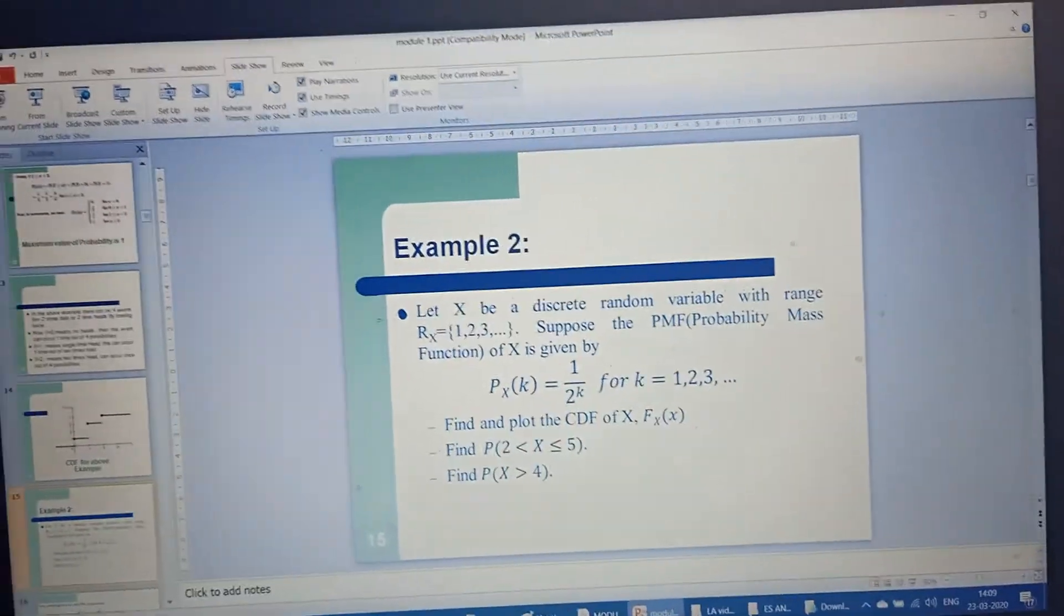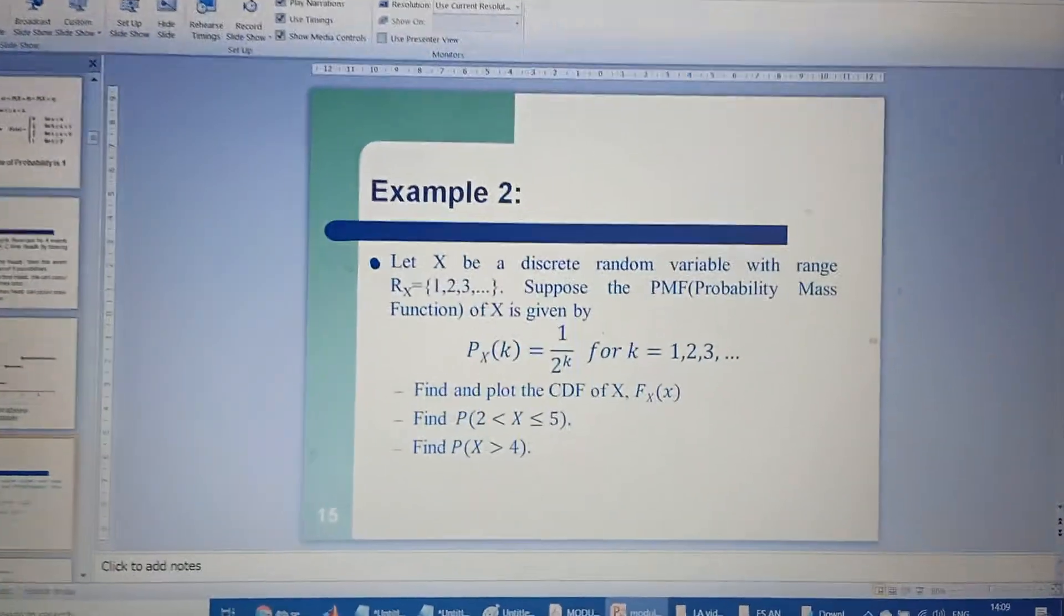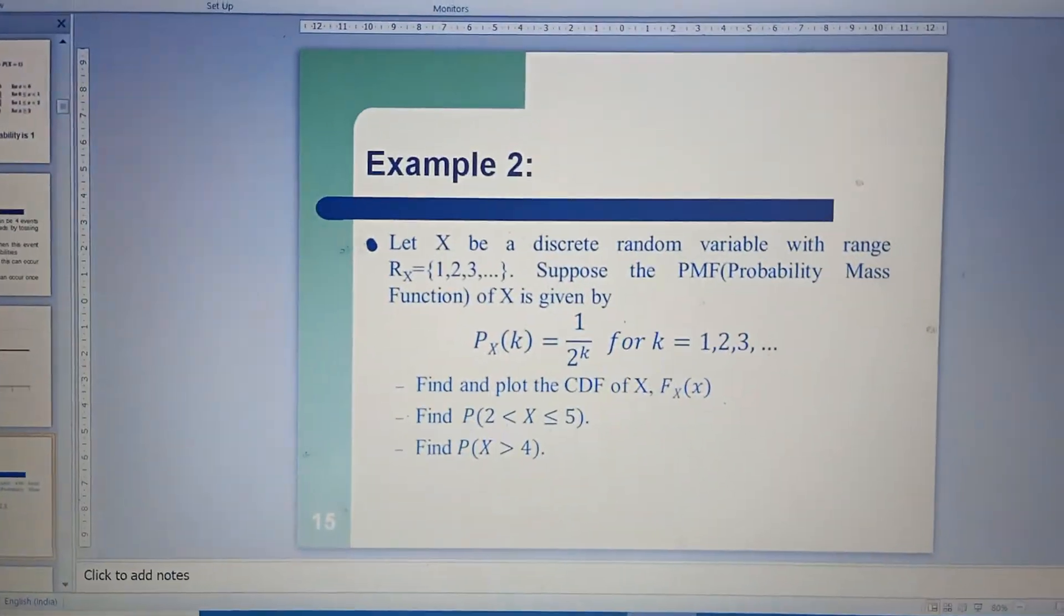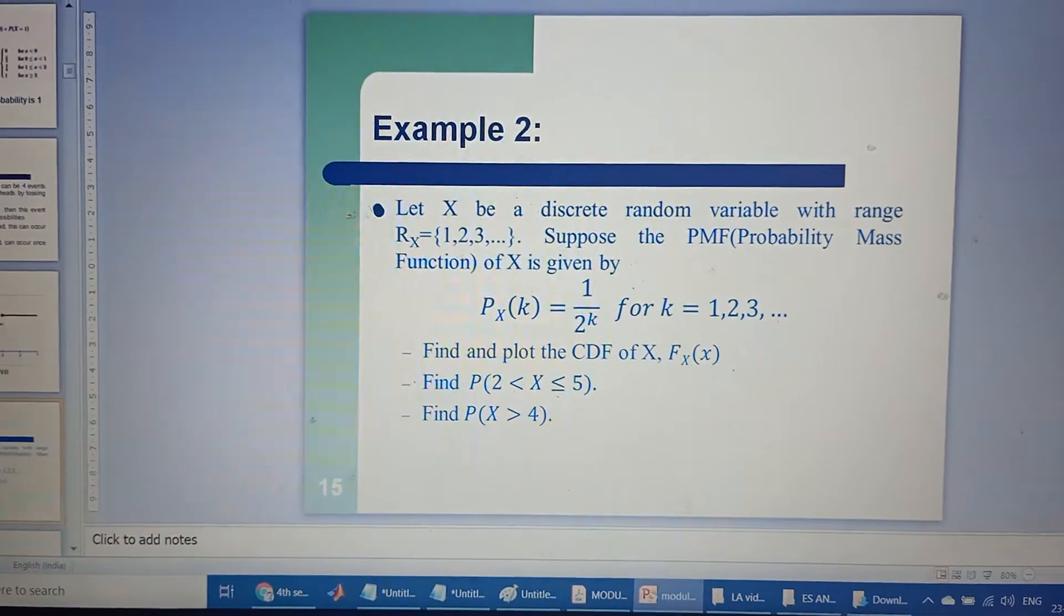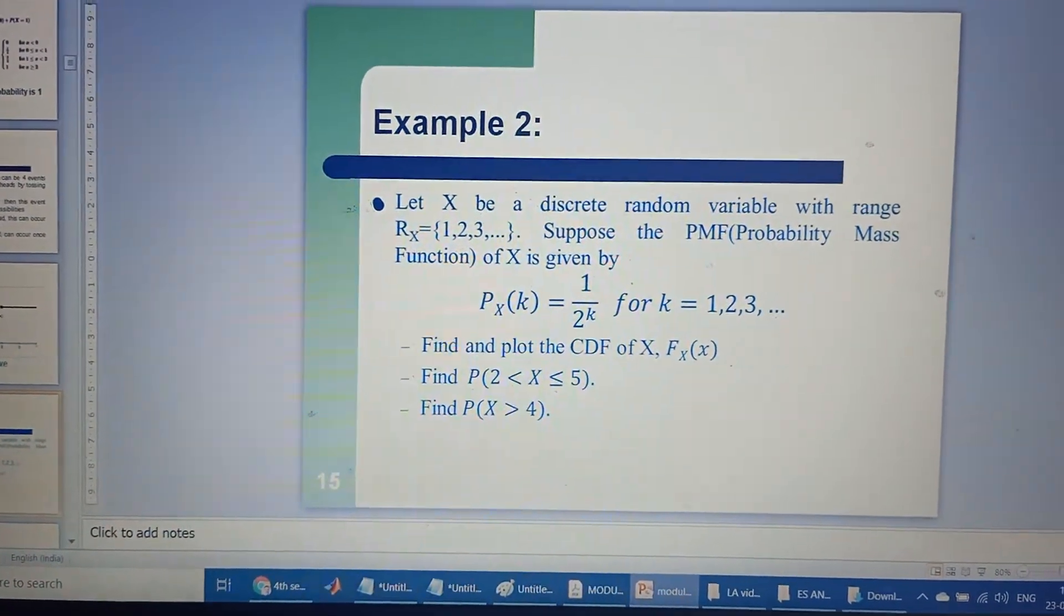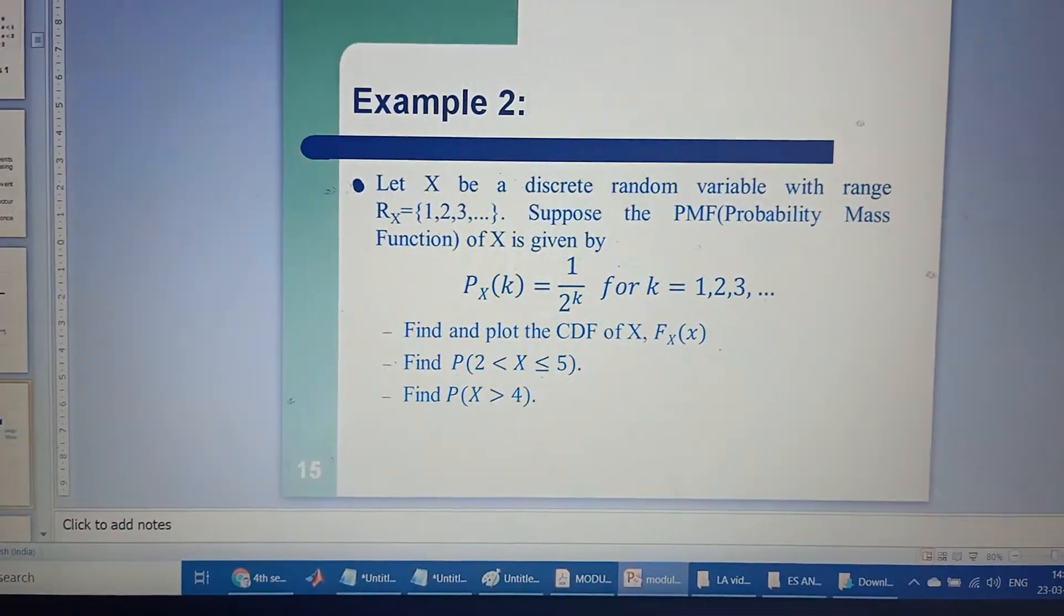Okay students, let us look into Example 2, where the question asks: let X be a discrete random variable with the range values 1, 2, 3, and so on.